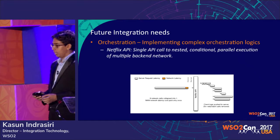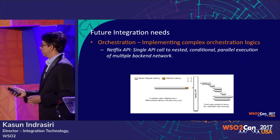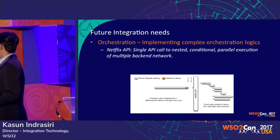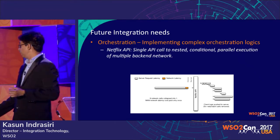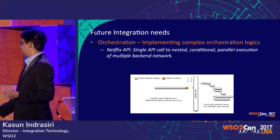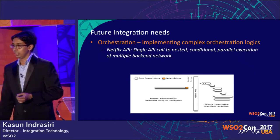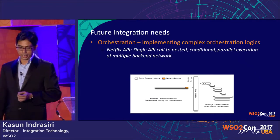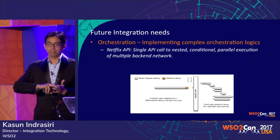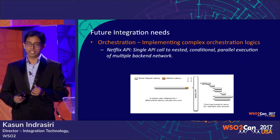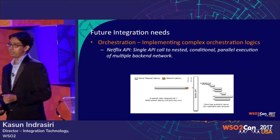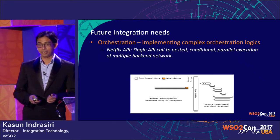For example, looking at Netflix API usage: a single call to the Netflix API triggers nine different backend service calls, and the service orchestration logic resides in the Netflix API. The number of services and external orchestrations required has increased drastically.